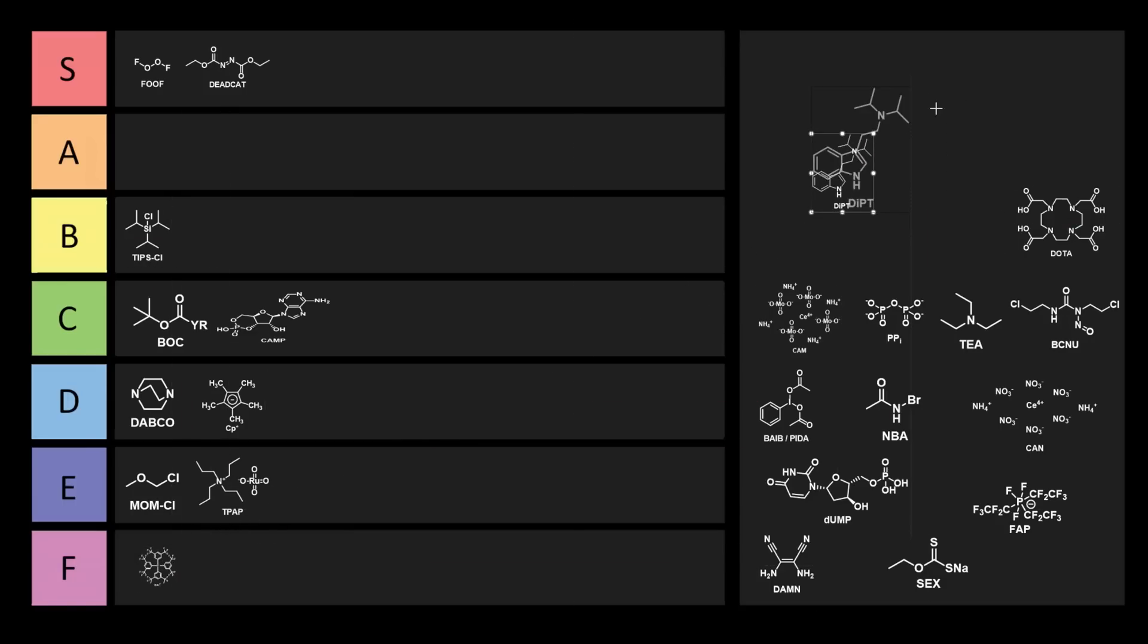Next up we have DIPT or D-I-P-T. DIPT is diisopropyl tryptamine. This compound is a tool for studying auditory perception, and Hamilton Morris and Jason Wall have spent over a decade studying it. Hey, did something happen to the audio? I think it might have dipped. Why don't we put DIPT into D tier because it starts with a D?